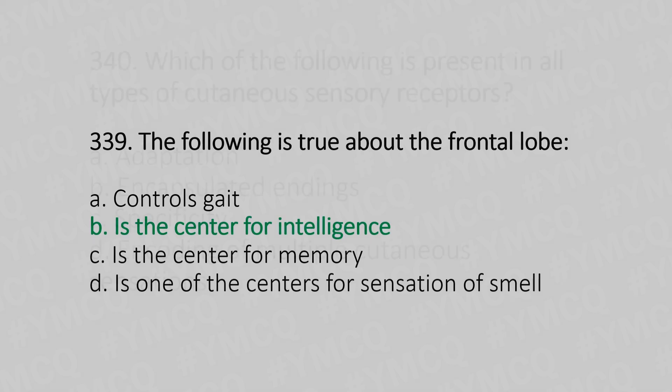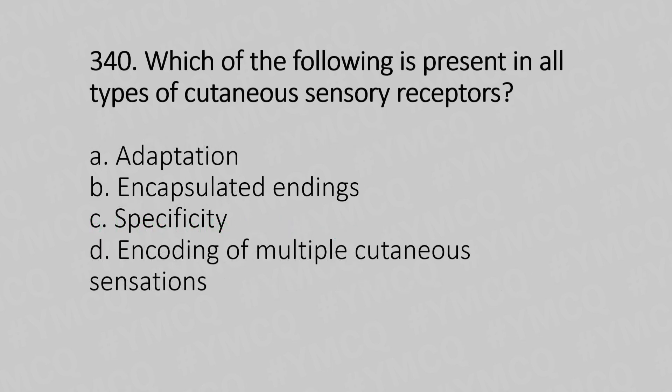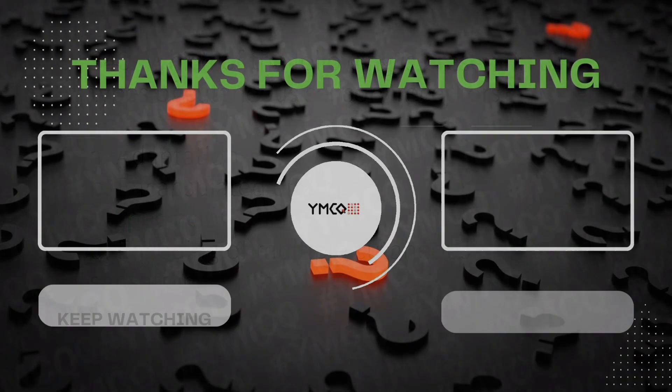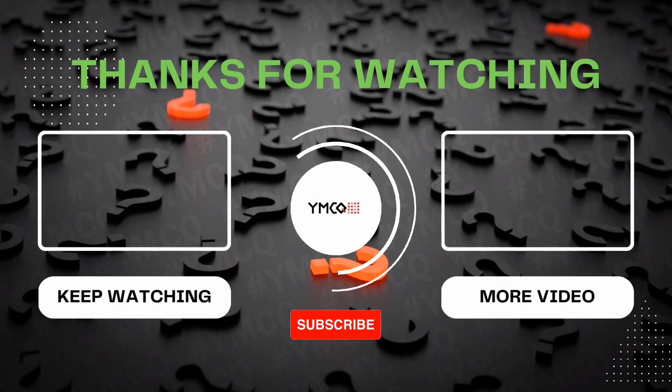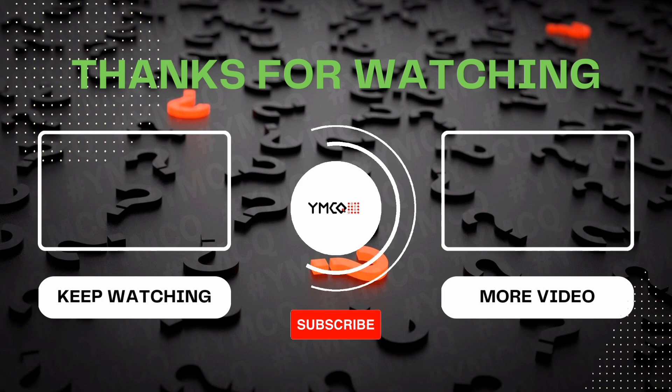Question number 340: Which of the following is present in all types of cutaneous sensory receptors? Option A: adaptation. Option B: encapsulated endings. Option C: specificity. Option D: encoding of multiple cutaneous sensations. The answer is option C, specificity.